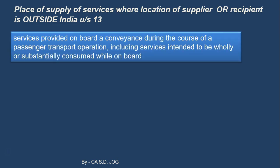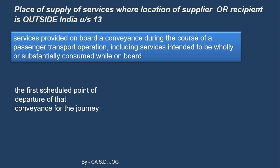Next provision: services provided onboard a conveyance during the course of a passenger operation, including those intended to be wholly or substantially consumed while on board. So there might be some services like catering services on a train or in a flight, that are provided and consumed substantially or wholly during the travel itself. If a train is travelling from Mumbai to Calcutta, it is running through different states. The place of supply of these services is the first scheduled point of departure of that conveyance for the journey. In our example, Mumbai to Calcutta, the first scheduled point of departure is Mumbai, so place of supply will be Mumbai. For example, catering services in a flight from Mumbai to Dubai — the first scheduled point of departure is Mumbai, that will become the place of supply of services for catering services provided on board that flight.